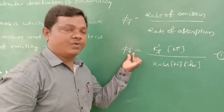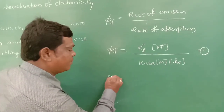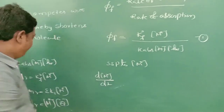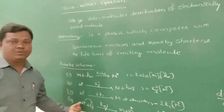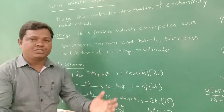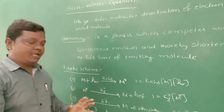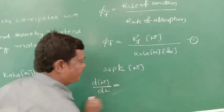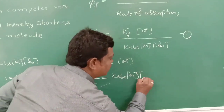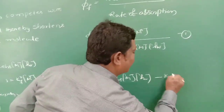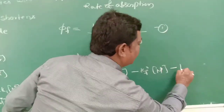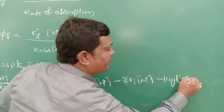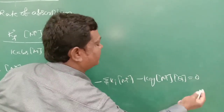Applying the steady-state approximation (SSA) to the concentration of M*, we write d[M*]/dt = 0. M* is formed in step one (positive term) and consumed in three steps (negative terms). So: K_ABS × [M] × I(hν) − K₀F × [M*] − ΣKᵢ × [M*] − KQ × [M*] × [Q] = 0. This is equation 2.